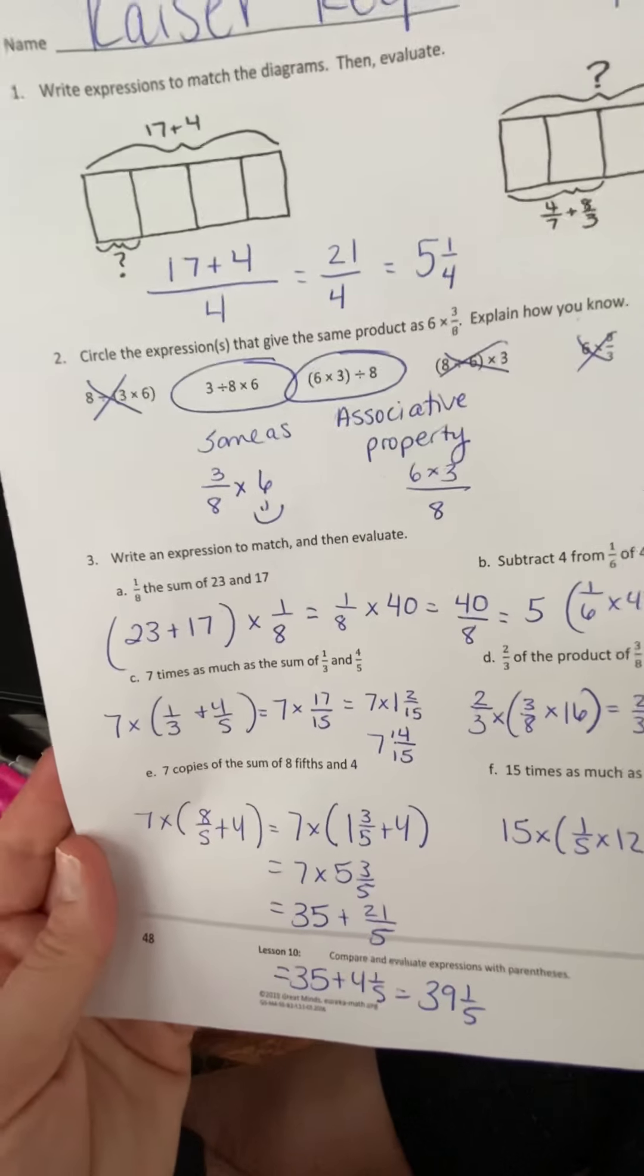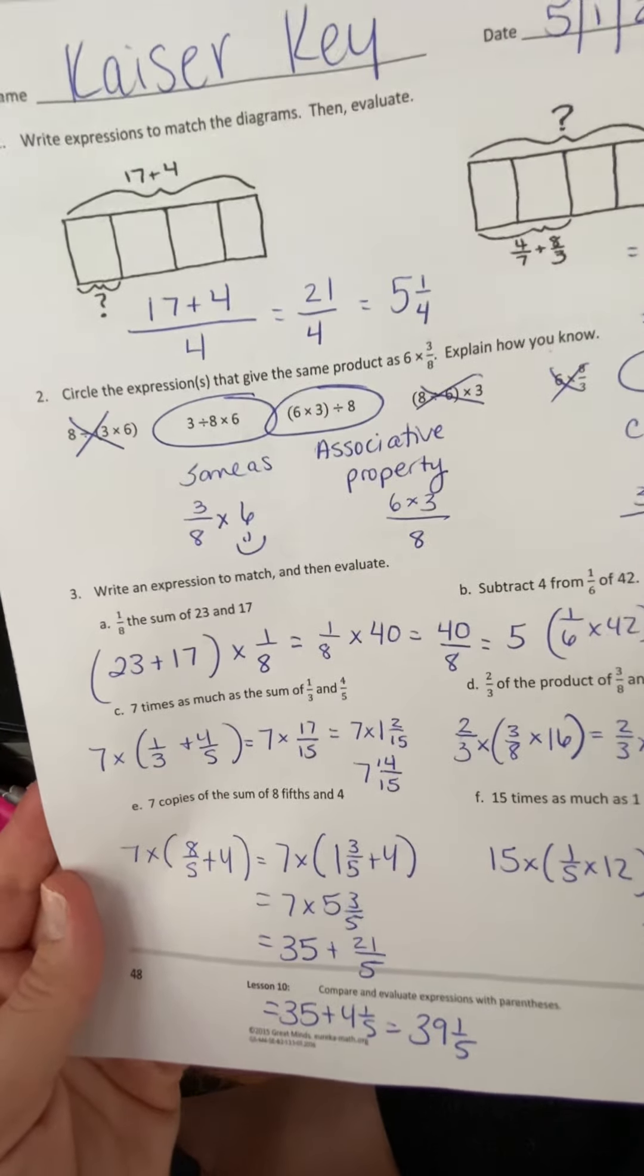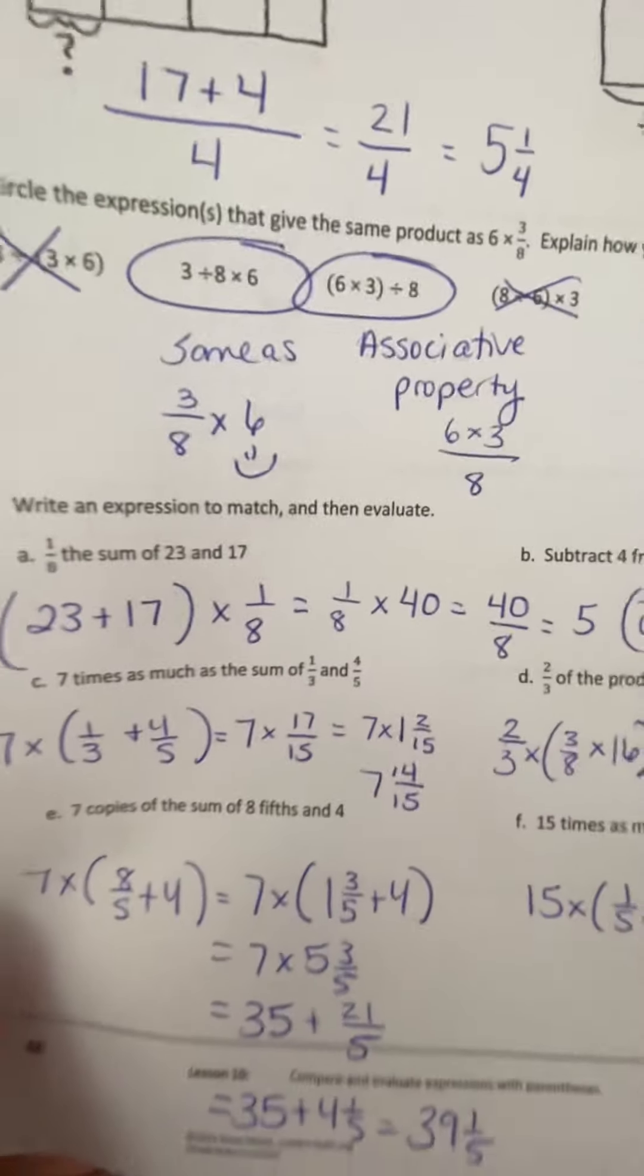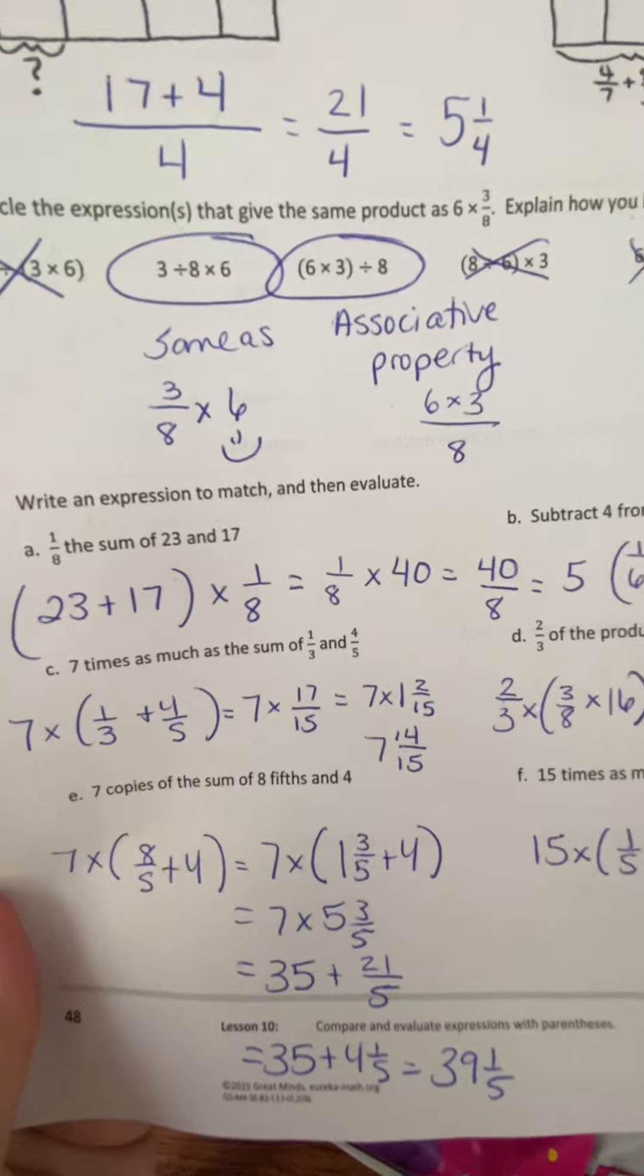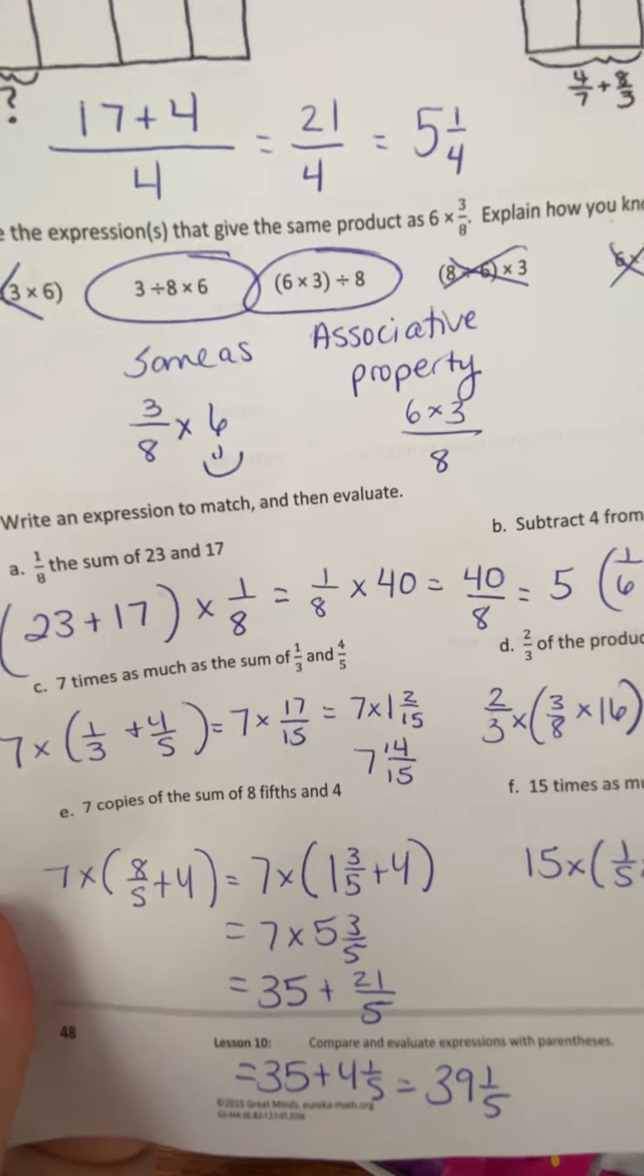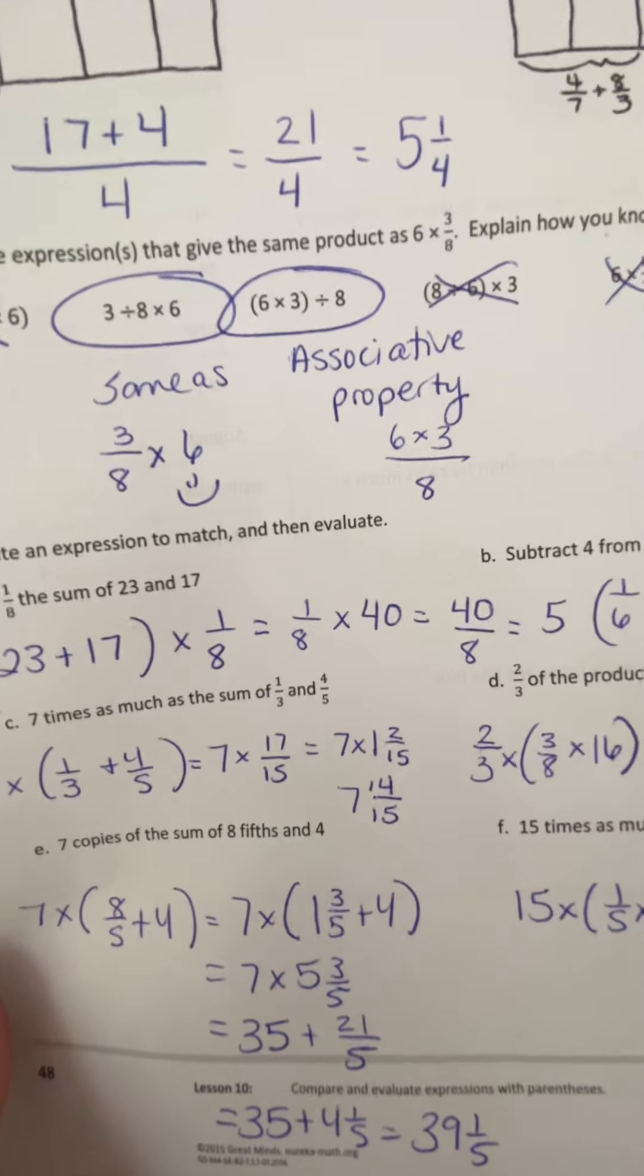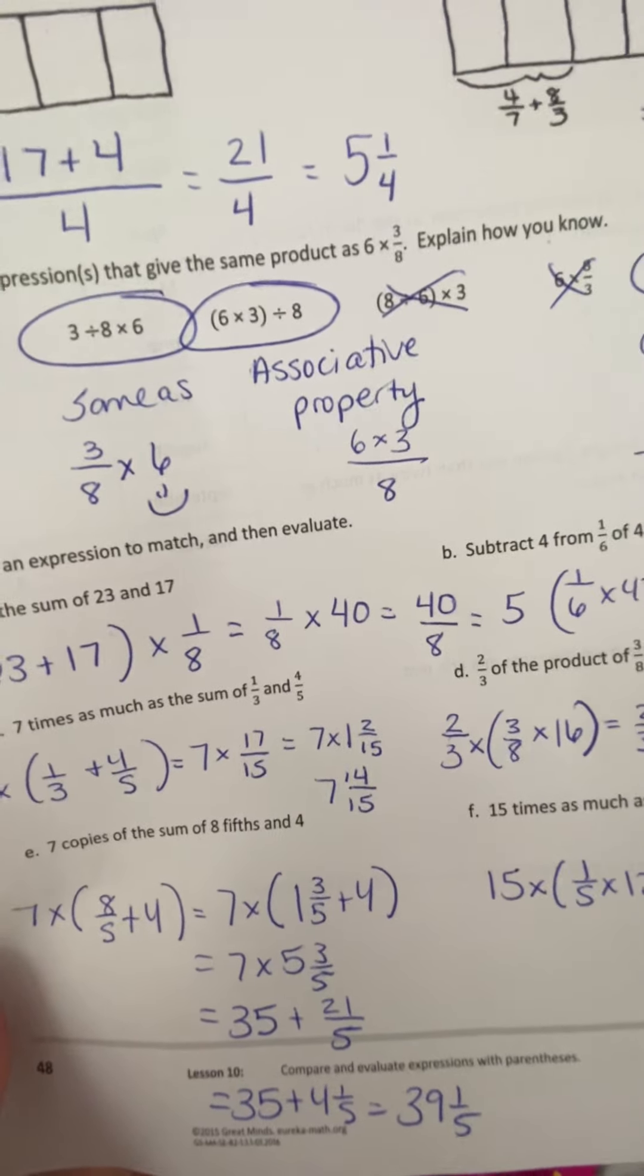Number three, write an expression to match and then evaluate. So for A, you have 1 eighth the sum of 23 and 17. So first you want to find the sum, which is addition, of 23 plus 17. Then you're going to multiply that times 1 eighth. So 1 eighth times 40, or 40 over 8 equals 5.